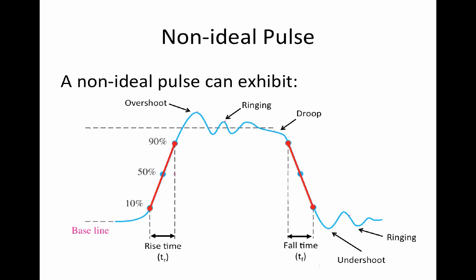The pulse width, TW, is a measure of the duration of the pulse and is defined as the time interval between the 50% points on the rising and falling edges.